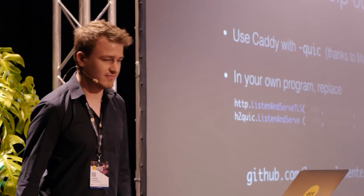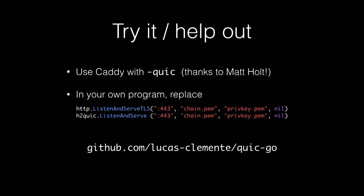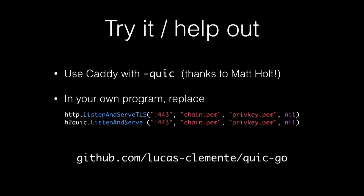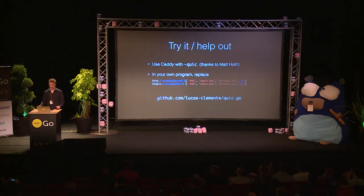If you want to try our implementation of QUIC, you can just run Caddy with the dash-QUIC option — thanks to Matt for being very eager to adopt QUIC. In your own program, you can replace your HTTP.ListenAndServeTLS calls with our package, h2quic.ListenAndServe, and that's it. You'll be able to talk QUIC and classic TLS and TCP at once. This is our GitHub.